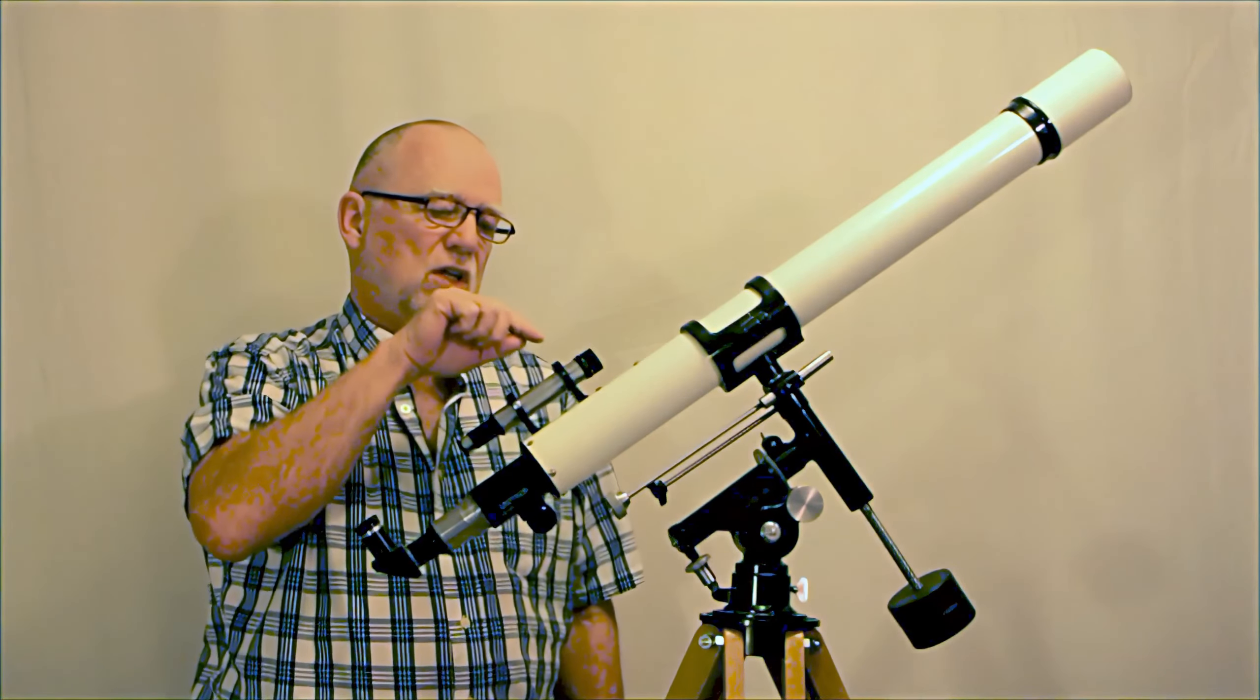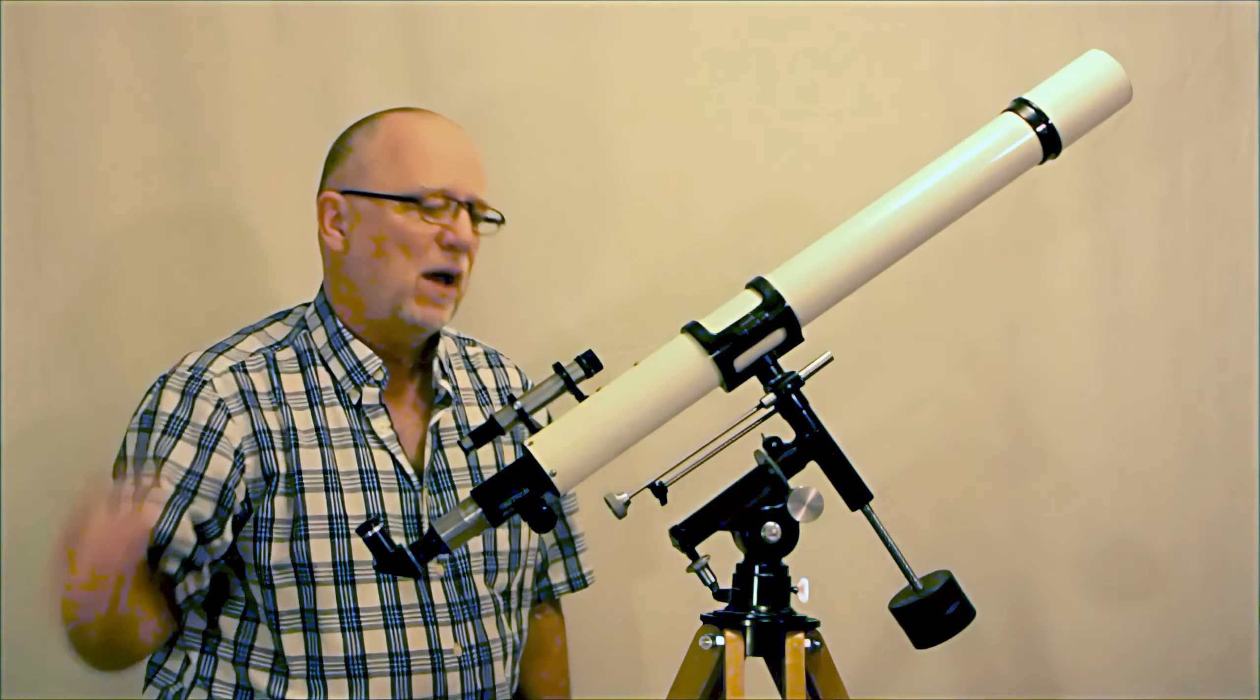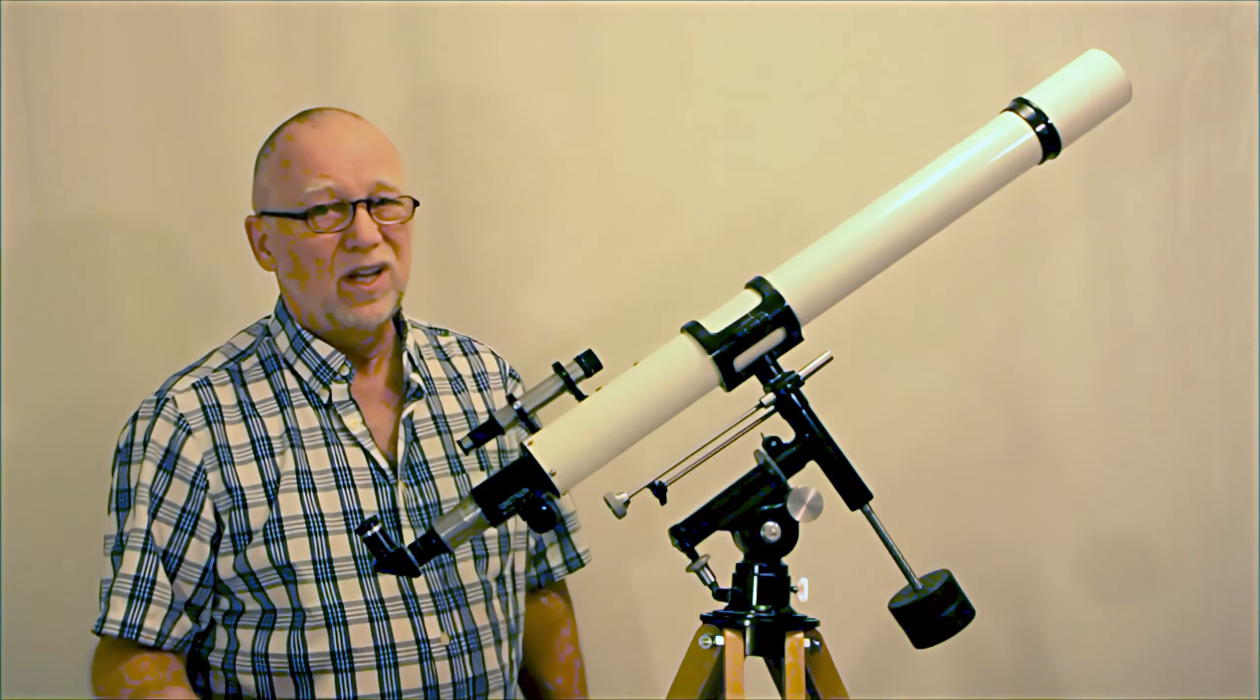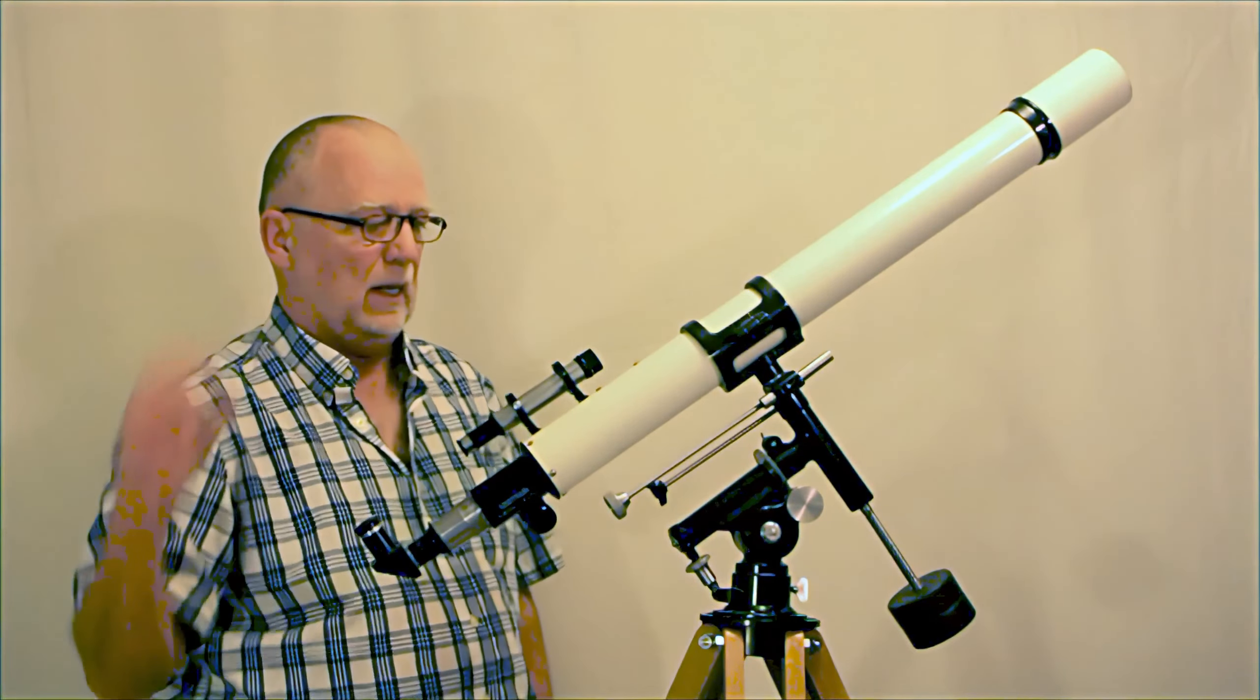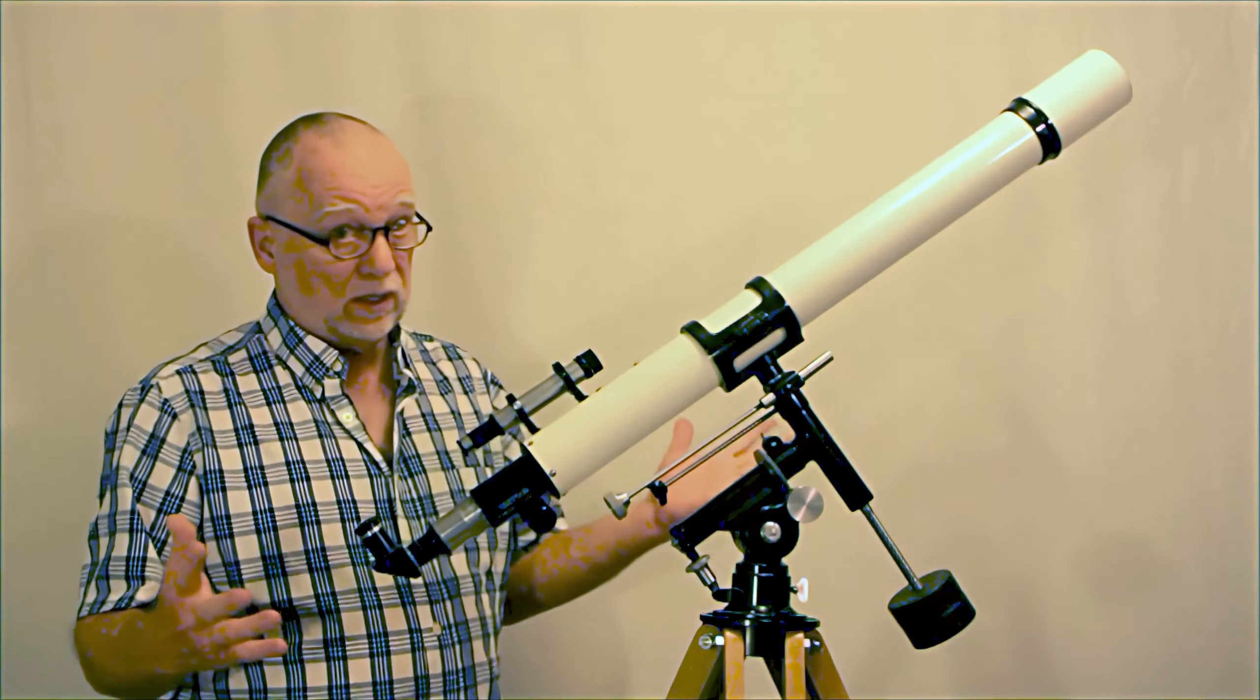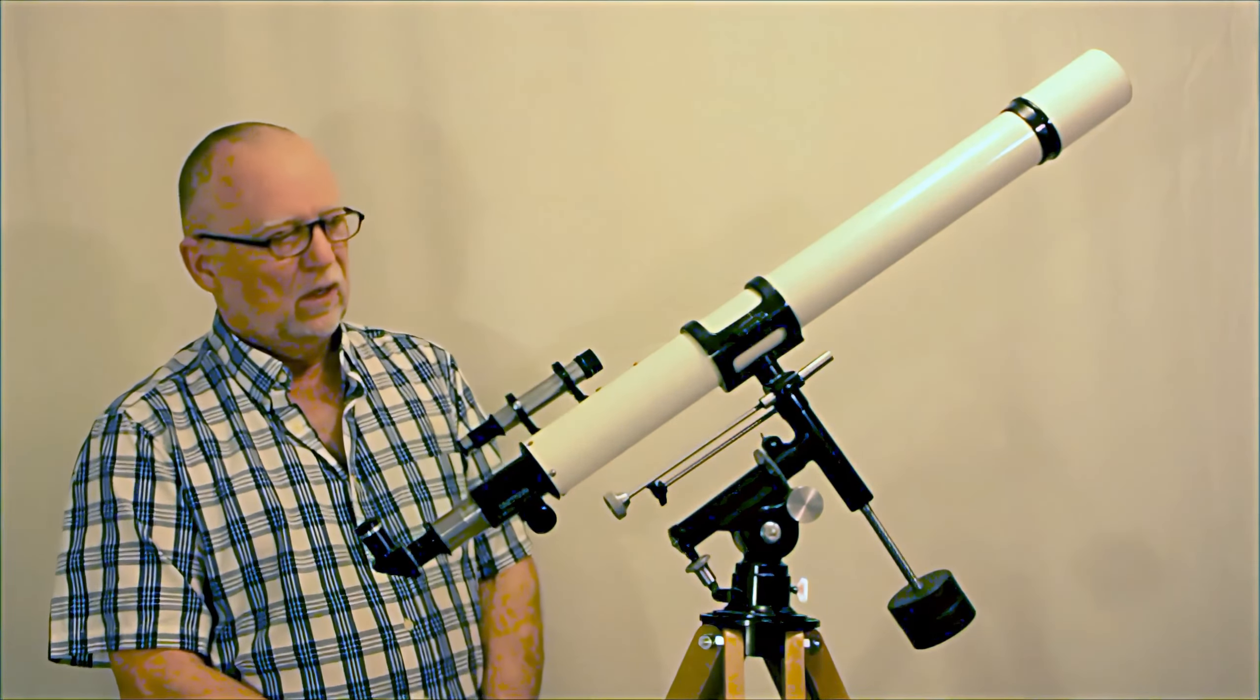It's marked Unitron 6x-23.5mm. In other words, it's a 6x23.5mm. Now that is a tiny, tiny little finder. But at this point the Unitron Company was so proud of that, that they put it right on there. They printed it right on there. Very big deal.